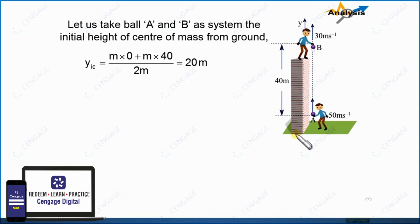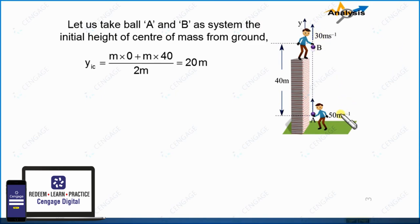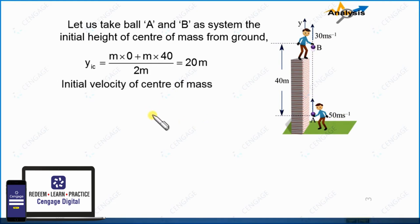Now let us find the initial velocity of the center of mass. The initial velocity of ball A is 50 meters per second in the upward direction, and ball B is 30 meters per second also in the upward direction. Let us consider the upward direction as positive. So we can write u-cm equal to m multiplied by 50 plus m multiplied by 30, divided by m plus m. This gives the initial velocity of the center of mass.